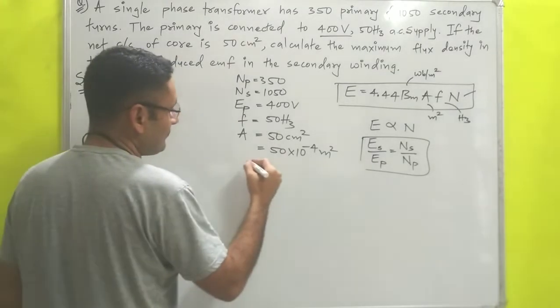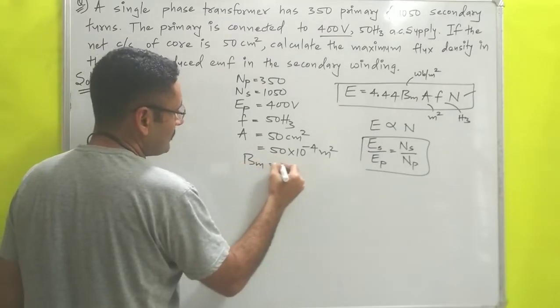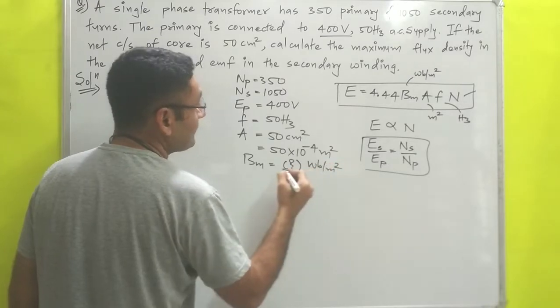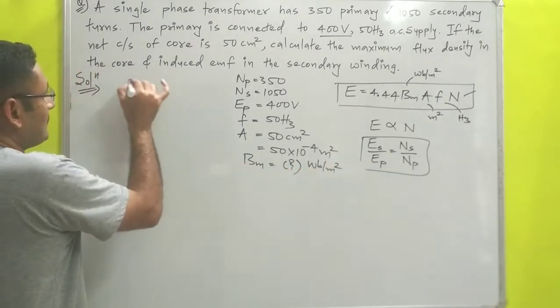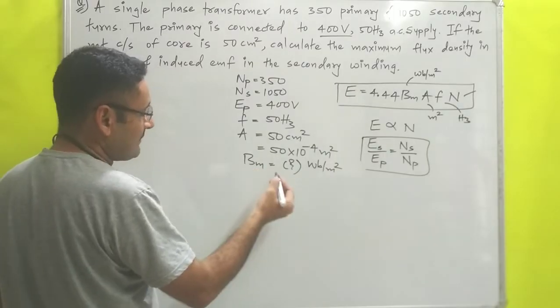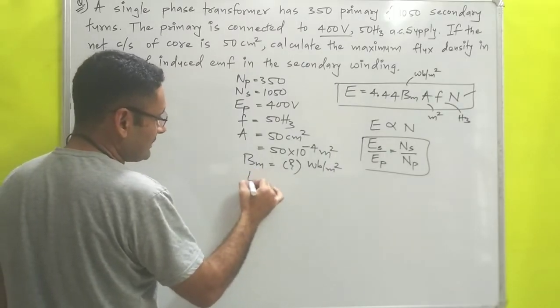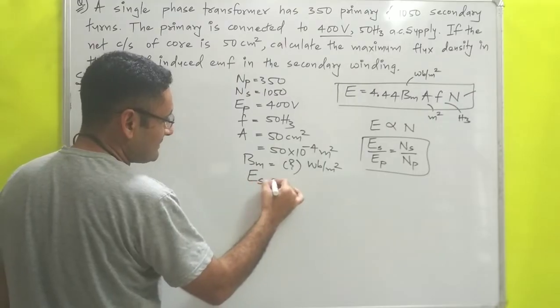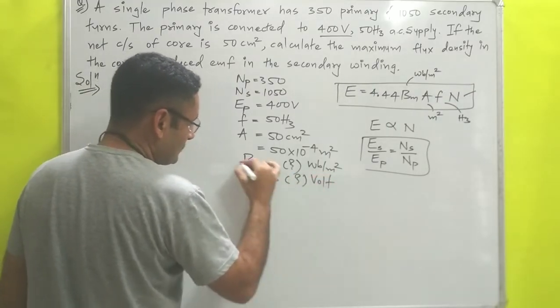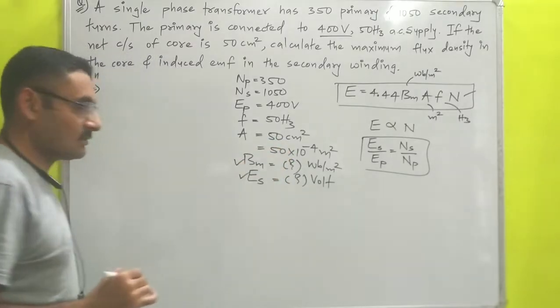Calculate the maximum flux density Bm in weber per meter square and induced EMF in secondary winding Es in volt. So these two answers you have to calculate.